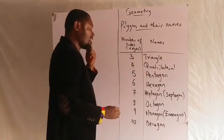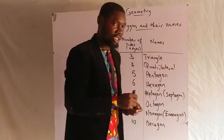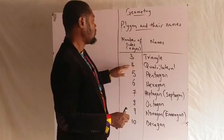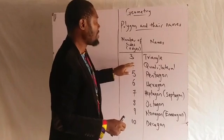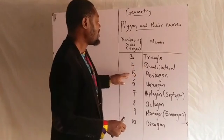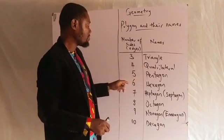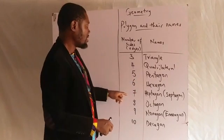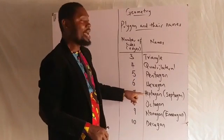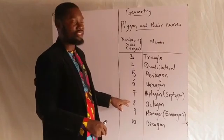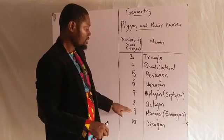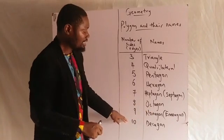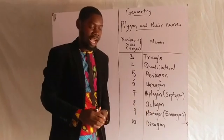The ten-sided shape is called decagon. To recap so far: three sides is triangle, four sides is quadrilateral, five sides is pentagon, eight sides is octagon, nine sides is nonagon, and ten sides is decagon.